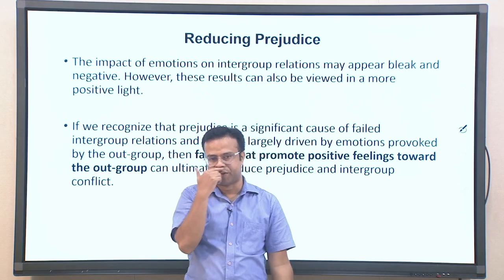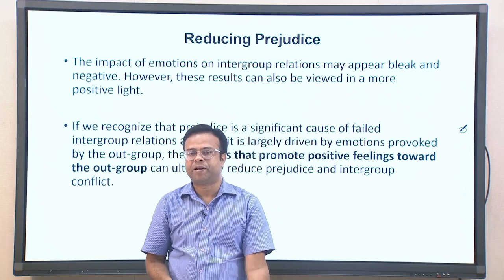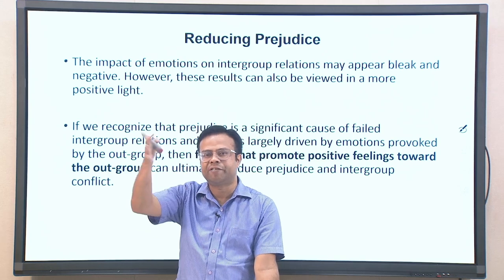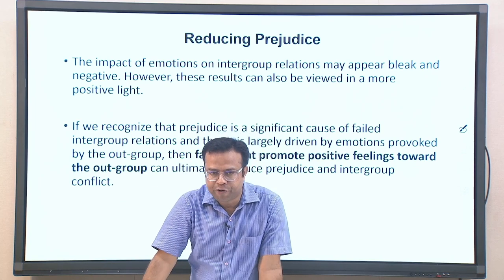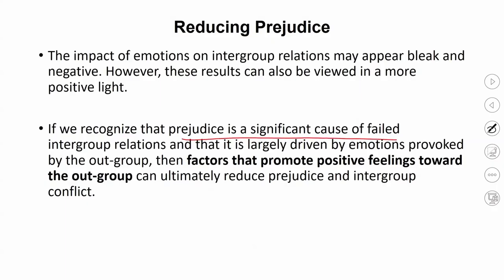What can be done to reduce prejudice? The impact of emotions on intergroup relations may appear bleak and negative, but from our understanding, we can recognize that prejudice is a significant cause of failed intergroup relationships — and it is largely driven by emotions. Since prejudice is driven by negative emotions towards the out-group, interventions can be done at the level of emotions. If negative emotions are responsible for prejudice, working on factors that promote positive emotions towards the out-group can reduce prejudice.